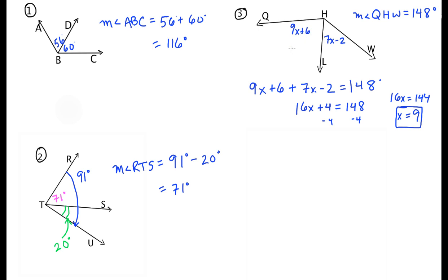And if you check that answer, a little work back in here, 9 times 9 is 81 plus 6 is 87. 7 times 9 is 63, 63 minus 2 is 61. So you add those together, 87 and 61, it's 148, so that checks out. Alright, last one.